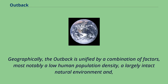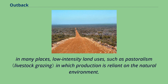Geographically, the outback is unified by a combination of factors, most notably a low human population density, a largely intact natural environment, and in many places, low-intensity land uses such as pastoralism, in which production is reliant on the natural environment.